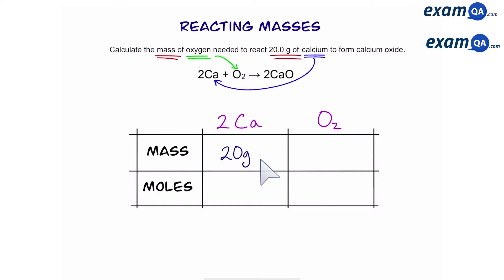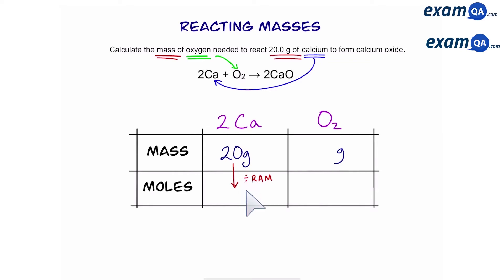Next, we're going to write down whose masses we already know. We already know there's 20 grams of calcium. We want to work out the mass of oxygen, so we don't know the value for that. To go from mass to mass, we first have to go down and turn it into moles. To turn mass into moles, we're going to divide it by the relative atomic mass.